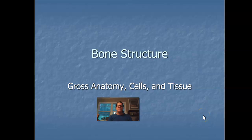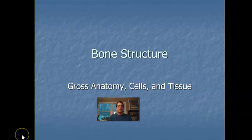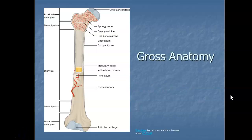Good morning! This lecture video is going to look at bone structure — the gross anatomy of a long bone. We will talk about the different cells that make up a bone, and then we will look at the two types of bone tissues. Bone differs greatly from the other tissues in our body because it's hard, and many of its functions depend on that characteristic hardness.